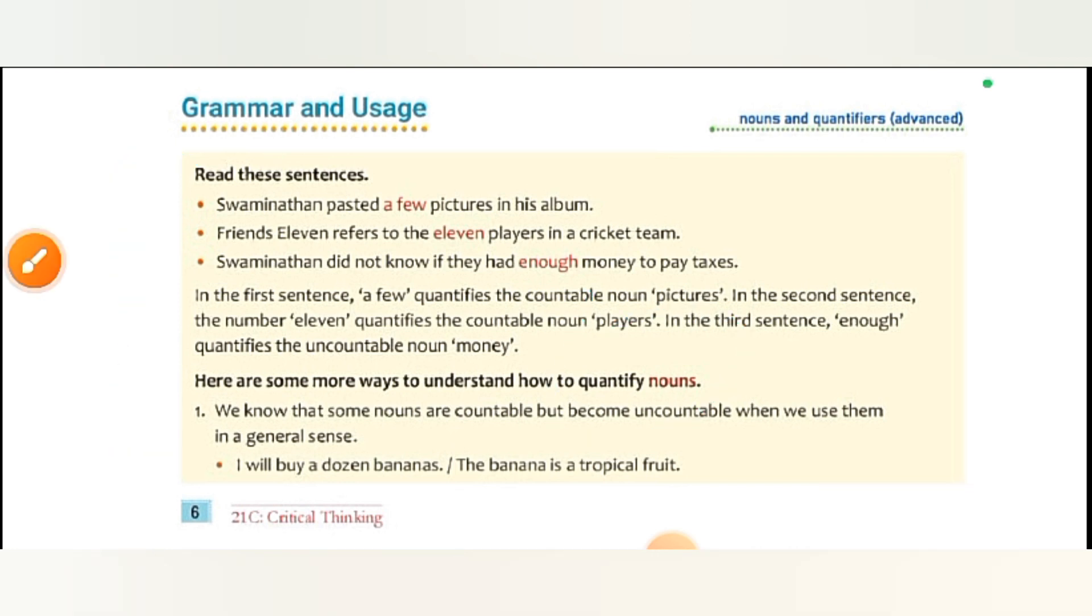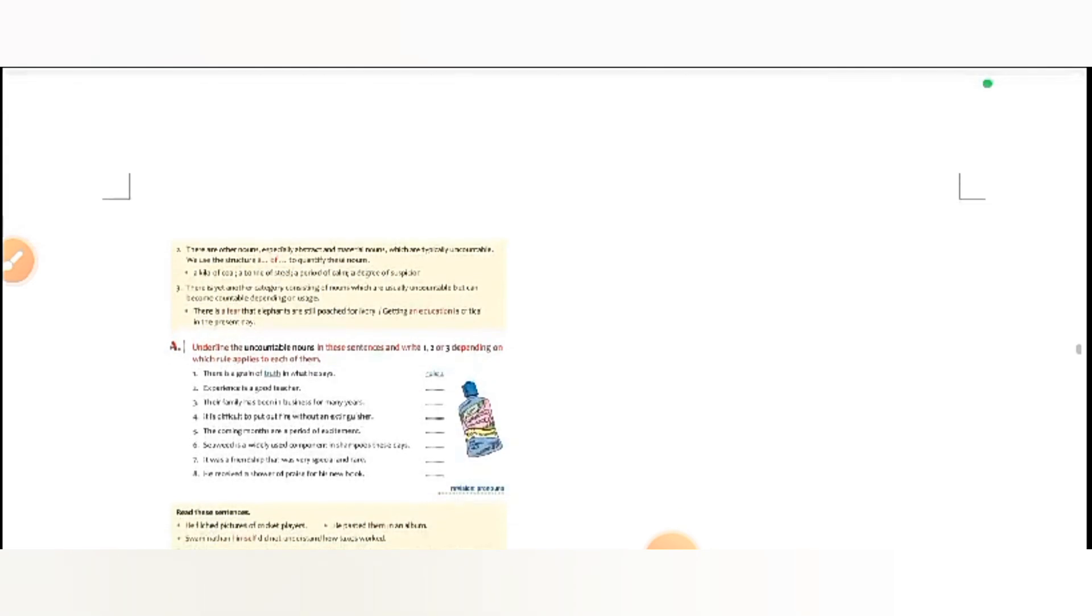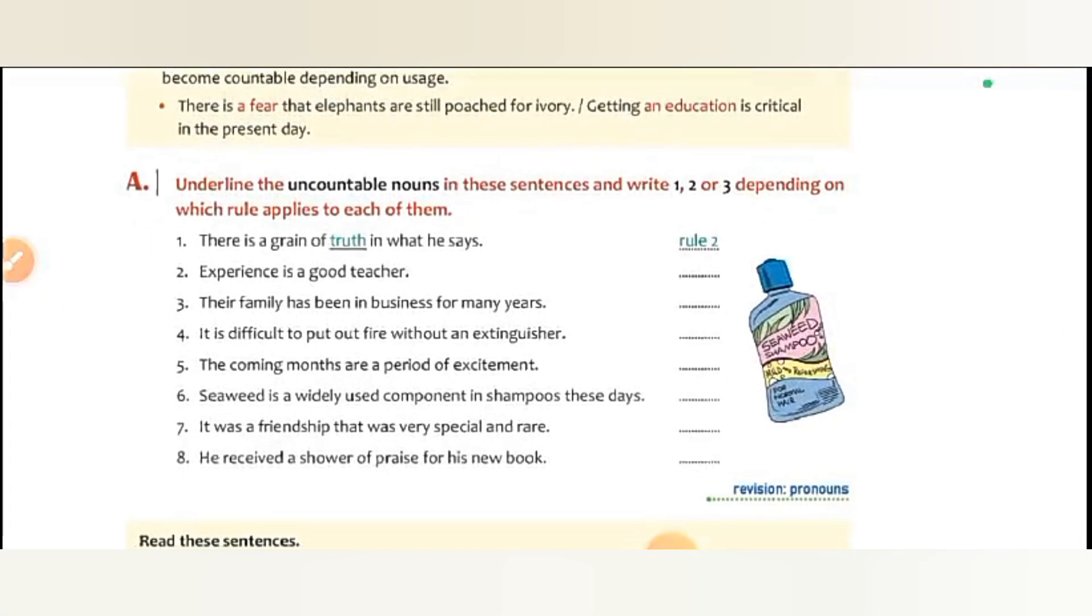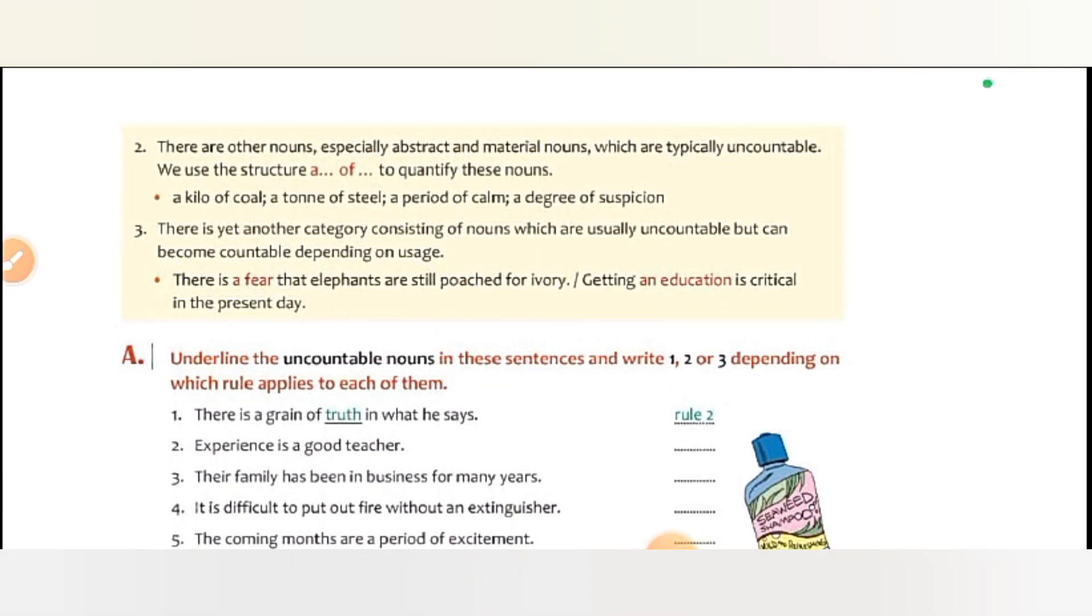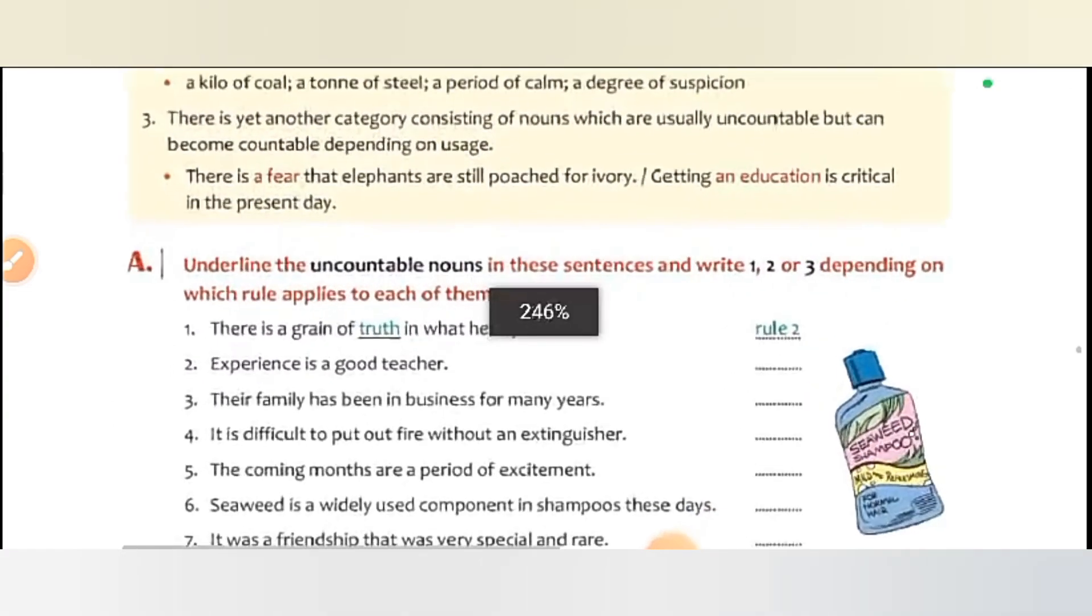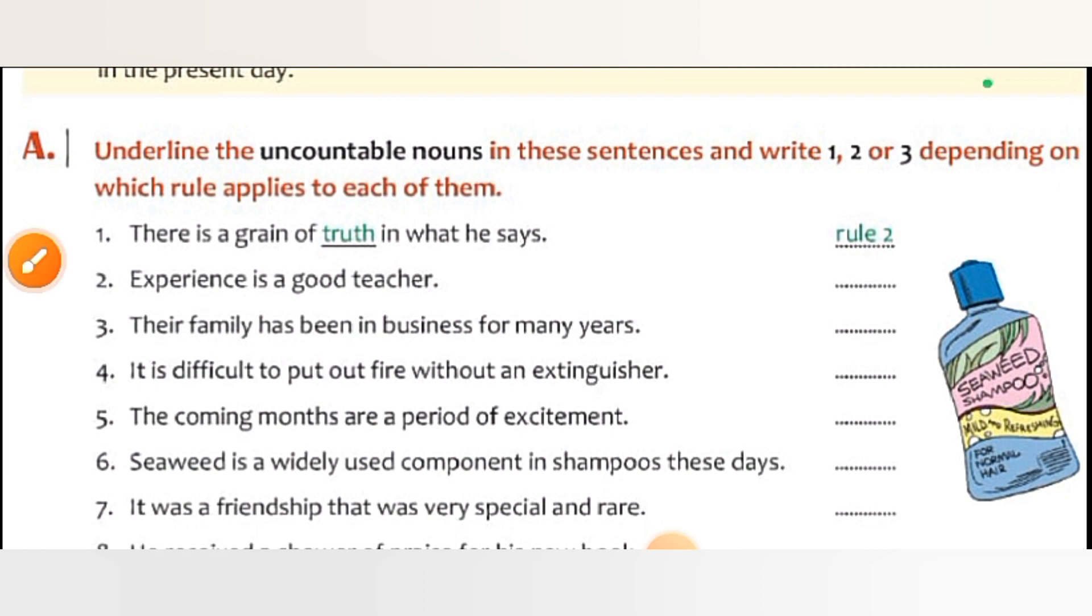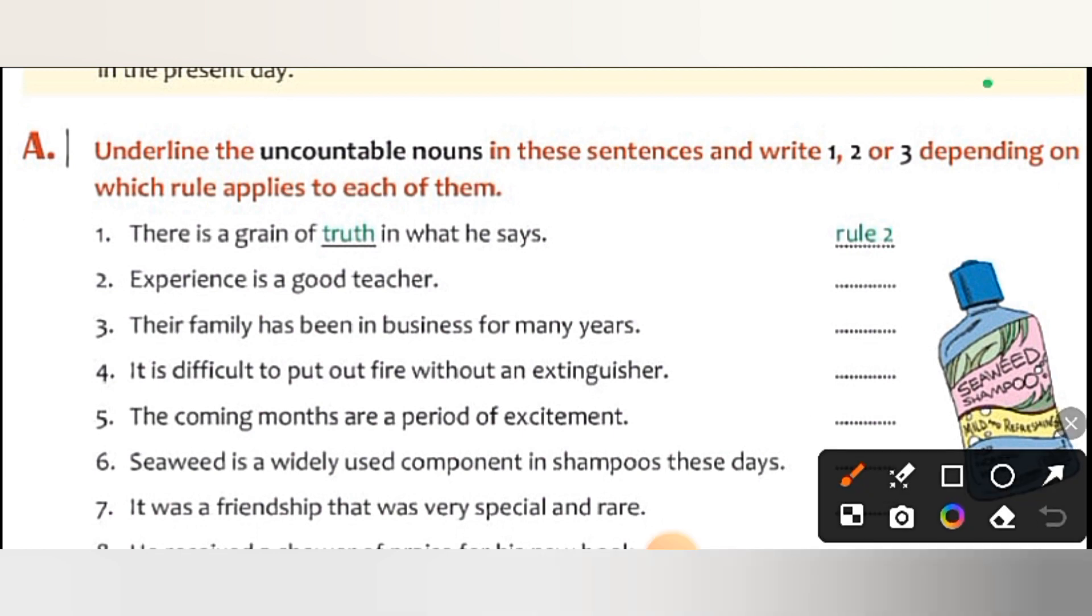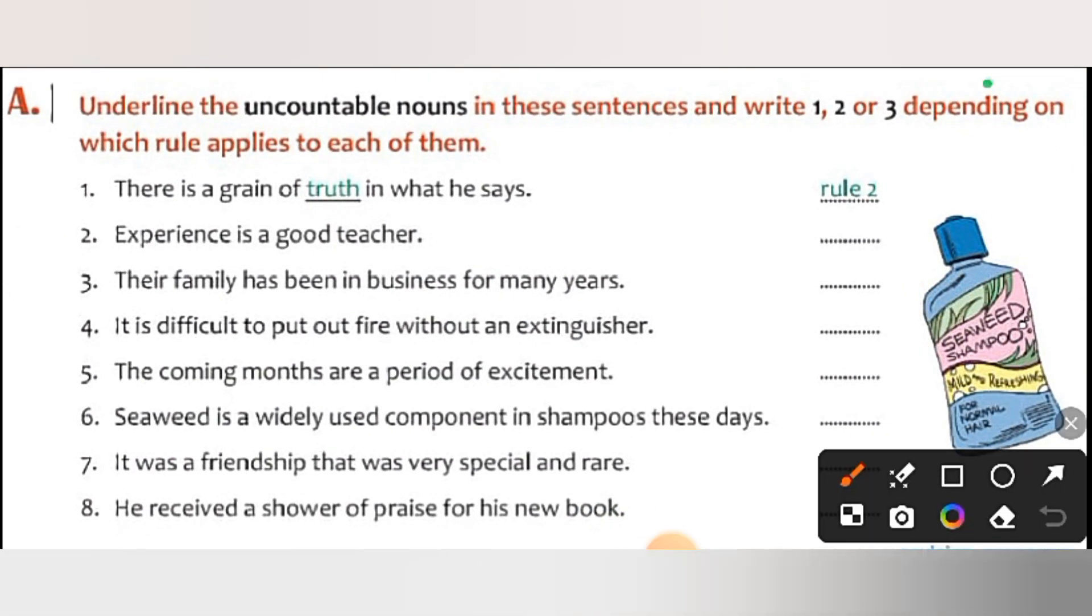Now, underline the uncountable nouns in these sentences and write one, two, or three depending on which rule applies to each of them. First: There is a grain of truth in what he says. Rule two. Second: Experience is a good teacher. Rule one. Third: Their family has been in business for many years.